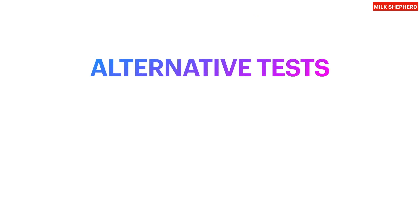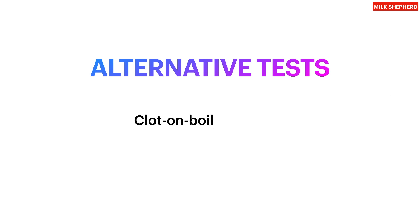The alternative tests to the alcohol test are the clot-on-boil test (COB test) and the acidity test.